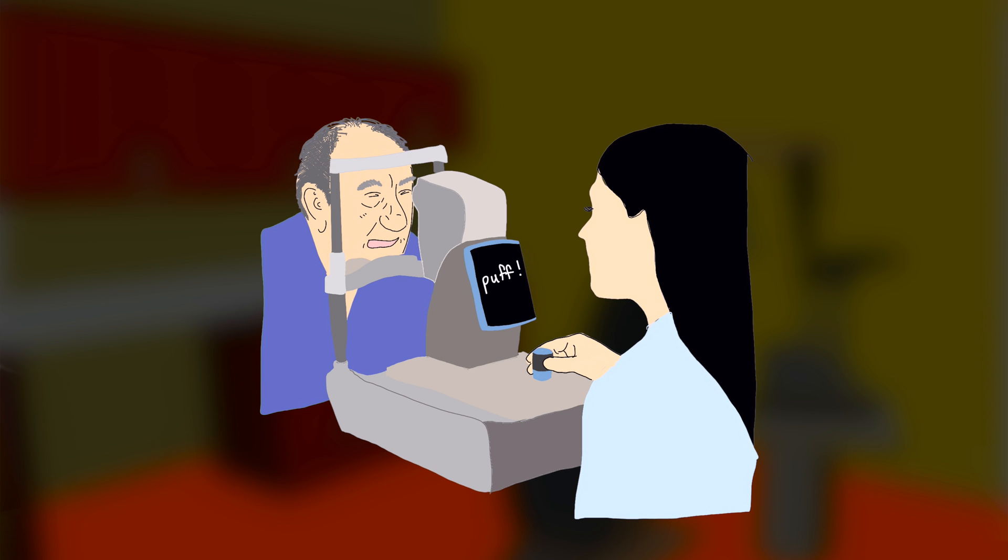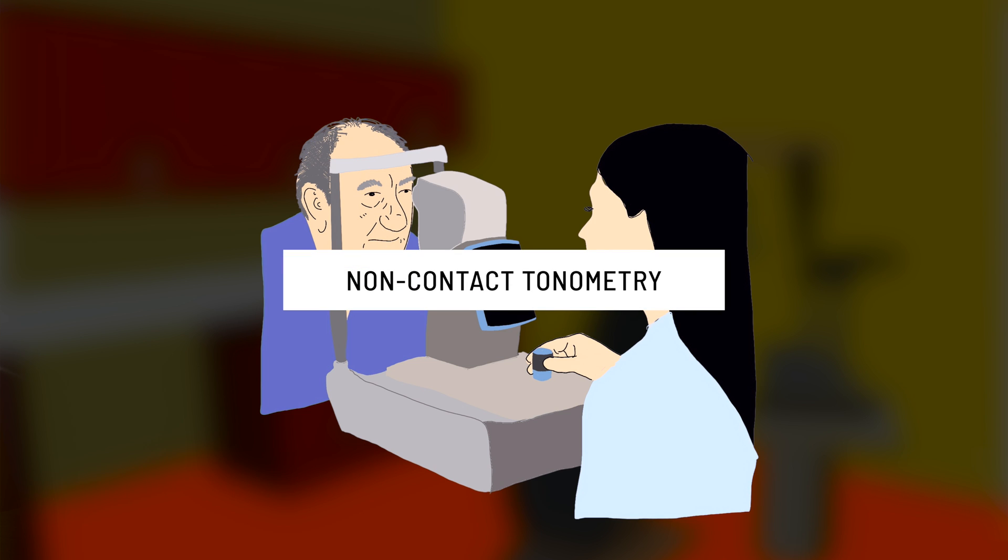The air puff test, or more correctly, the non-contact tonometry test is a very good example of this. It works by shooting concentrated air onto the cornea, and the machine observes how the cornea rebounds from this puff.